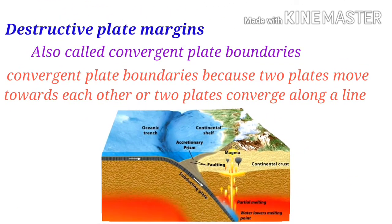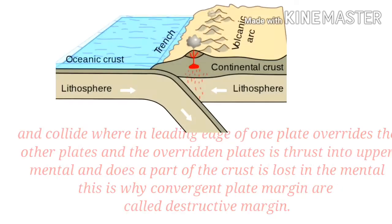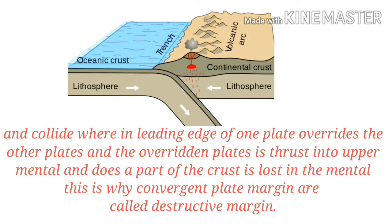Convergent plate boundaries — also called destructive plate margins — occur where two plates move towards each other and converge along a line. The leading edge of one plate overrides the other, and the overridden plate is thrust into the upper mantle, and thus a part of the crust is lost in the mantle. This is why convergent plate margins are called destructive margins.